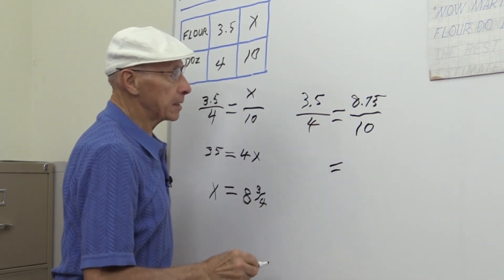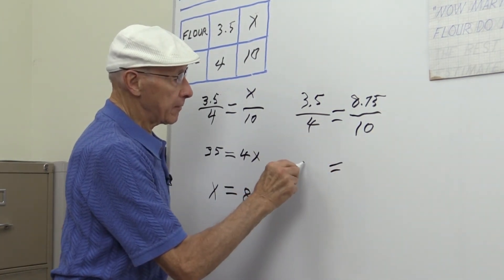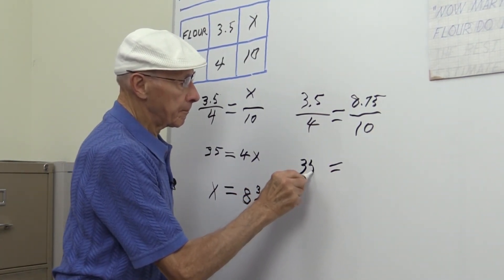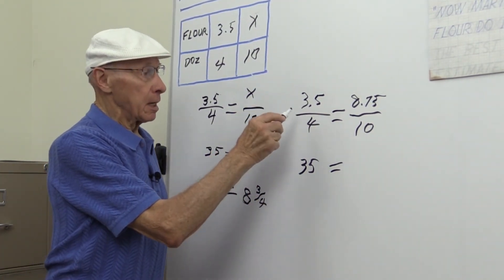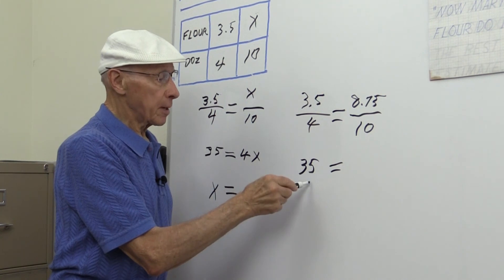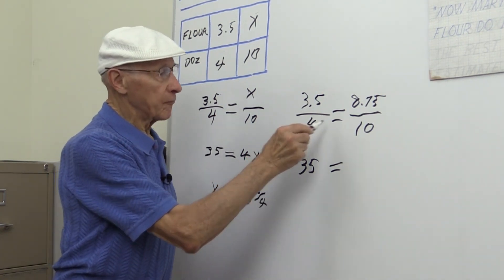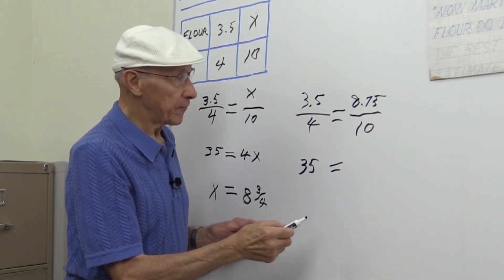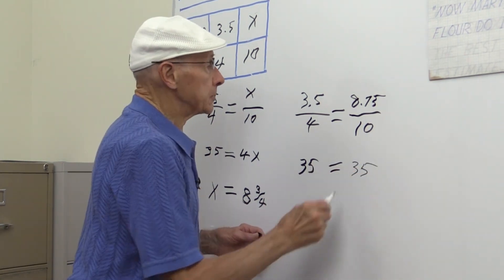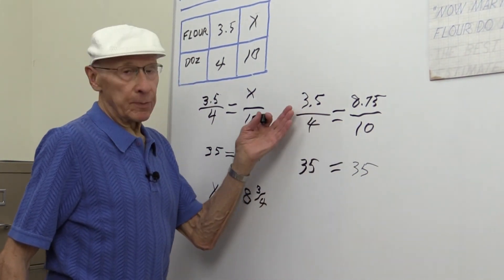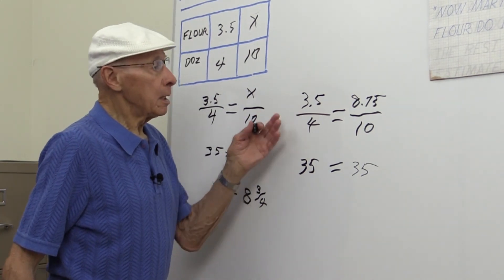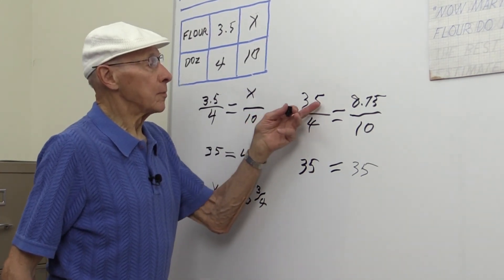Now, if you do the mathematics here, we have 35. Cross multiply: 10 times 3.5—that's the cross multiplying—and the cross product is 35, or 4 times 8.75. So if we cross multiply, 10 times 3.5, again the decimal point moves to the right one, and we have 35.